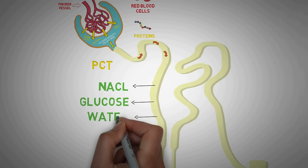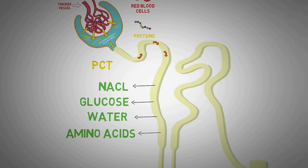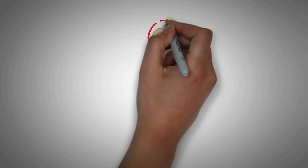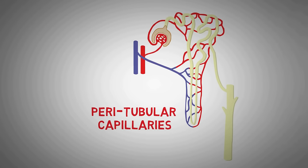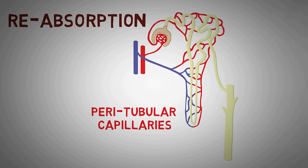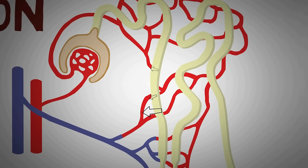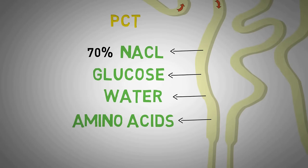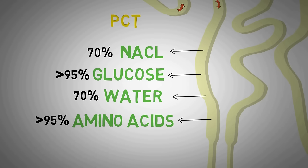We don't want to lose glucose — that's hard-earned energy — and we don't want to lose as much sodium chloride either. This is achieved by reabsorption. The whole length of the renal tubule is surrounded by peritubular capillaries, and whatever gets reabsorbed is passed back into blood circulation. This is called reabsorption — not absorption — because these nutrients were already absorbed once from the gut. About 70% of sodium chloride and 70% of water get reabsorbed in the proximal convoluted tubule, along with more than 95% of glucose and amino acids.